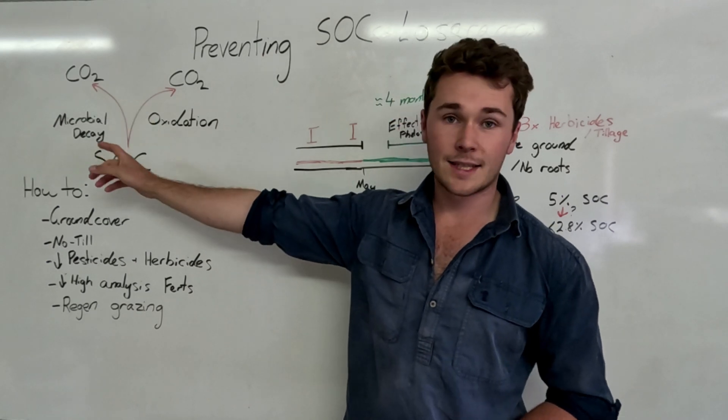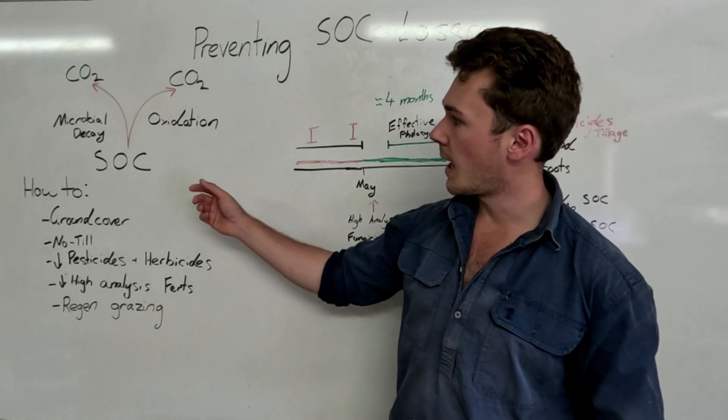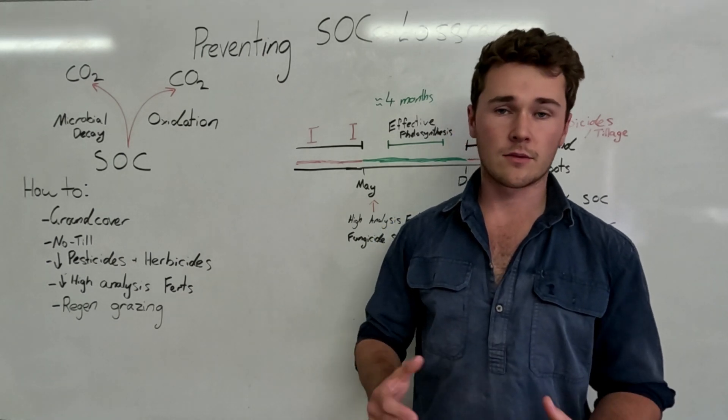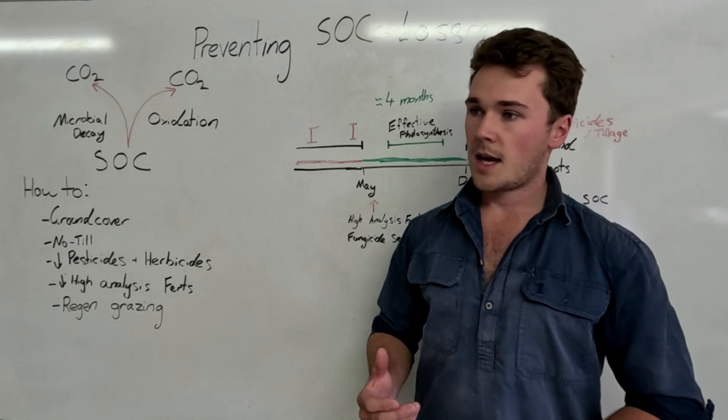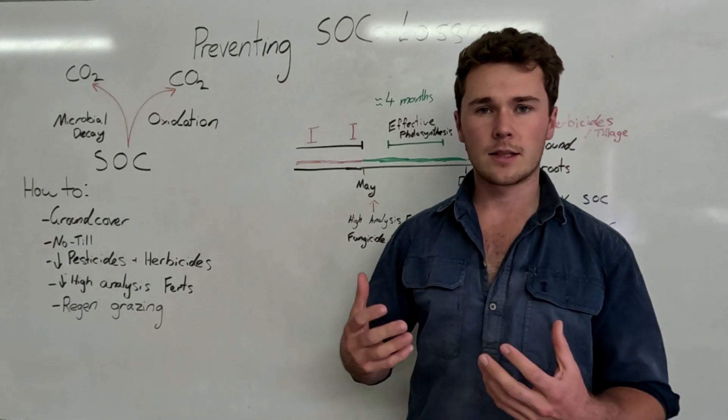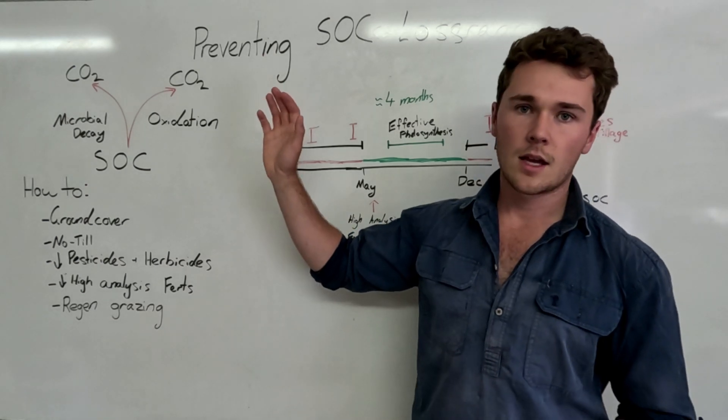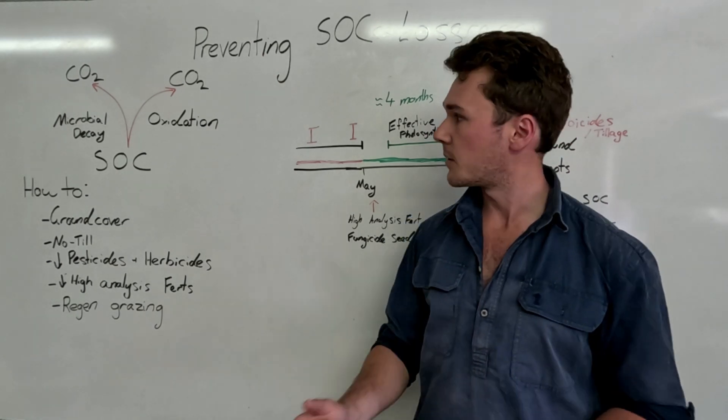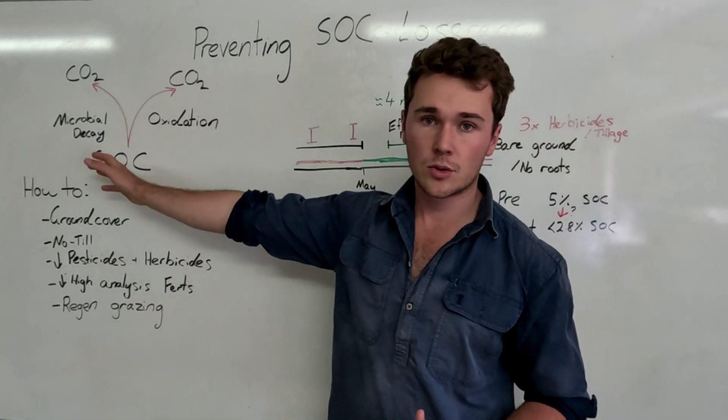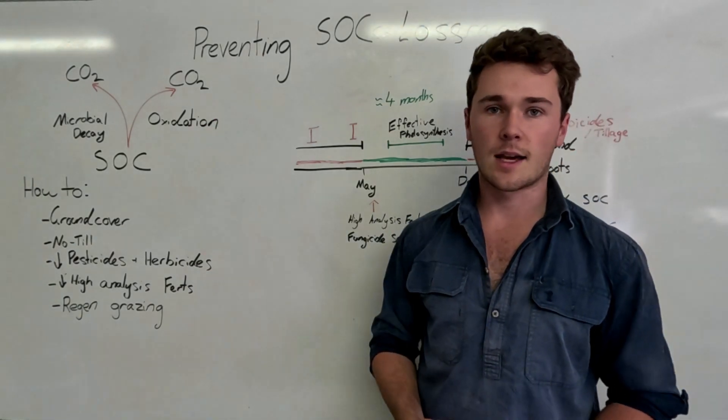The first one is microbial decay, which is where microbes use that soil organic carbon or matter as an energy source. The other one is oxidation. Oxidation is similar to burning, so if you think of when you burn a stick or some wood it loses carbon. In a similar sense, oxidation is like burning the soil organic carbon without effectively using a flame. It's a chemical process, the exchange of electrons in a particular way, but it produces carbon dioxide. So really there's a biological way to lose soil organic carbon and then there's a chemical means.